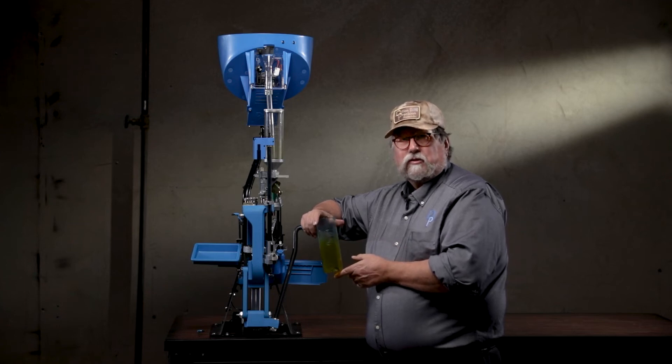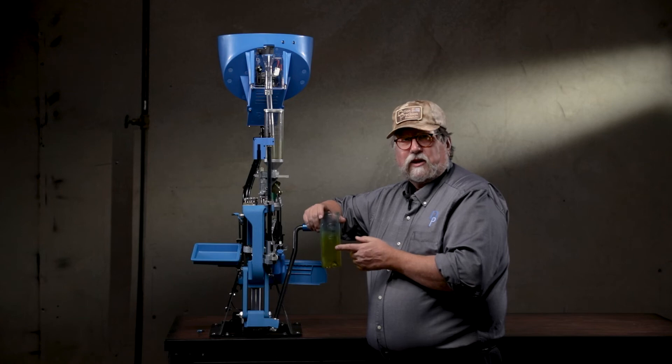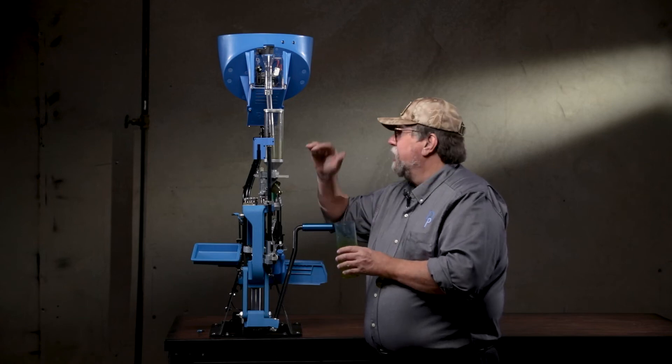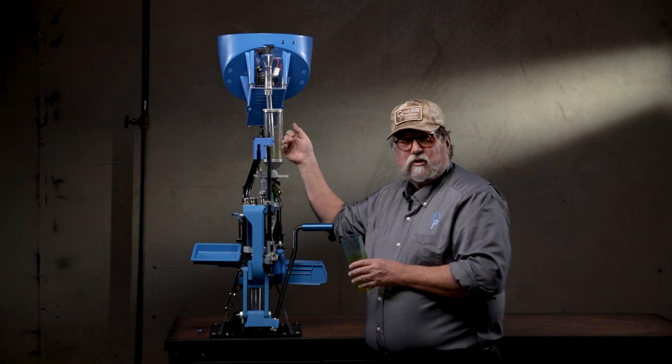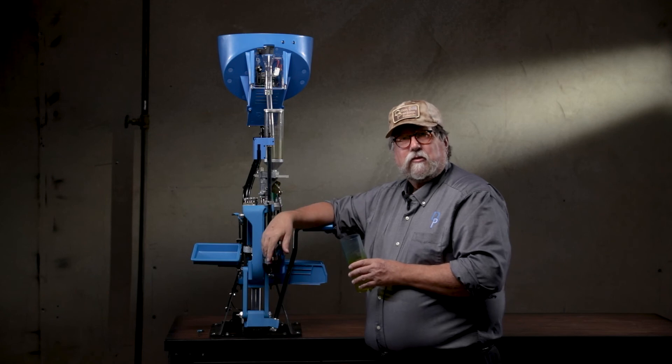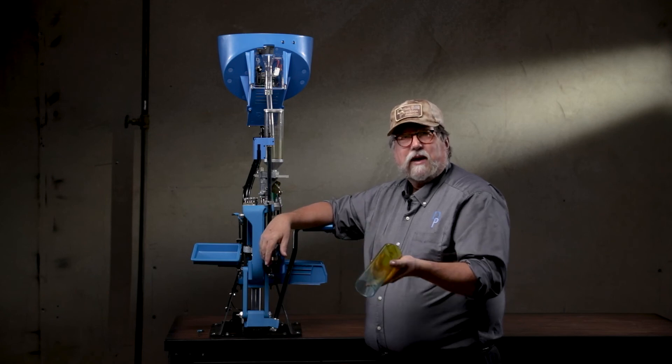Eventually, it'll darken to a point where it's opaque and you can't tell if you have any powder in the hopper. So to prevent this, always empty this, put the powder back in its original container, end up with an empty hopper tube after you're done reloading. And you won't have this.